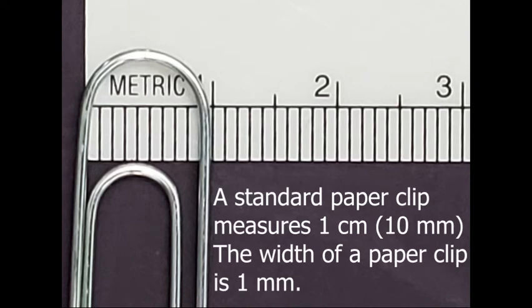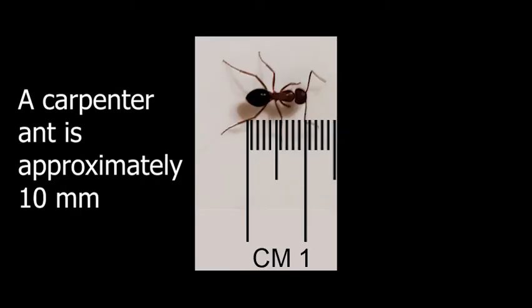A standard paper clip measures 1 centimeter. The wire width of the paper clip is 1 millimeter. A carpenter ant is approximately 10 millimeters.